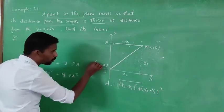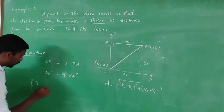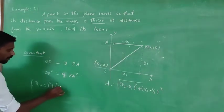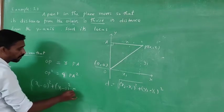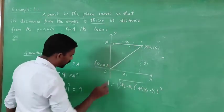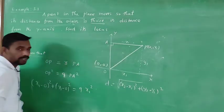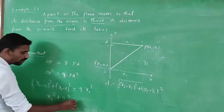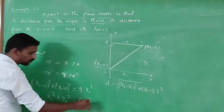So x1² + y1² equals 9 times PA. What is PA distance? It's x1. So x1² plus y1² equals 9x1².